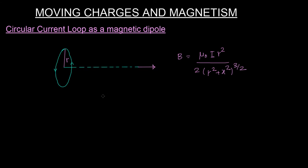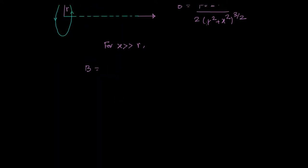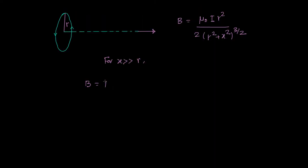Now let's try to understand what happens when x is very very greater than r. For x much greater than r, I have to neglect r squared, so my B becomes mu naught i r squared upon 2, divided by x squared to the power 3 over 2, which is nothing but x cubed.